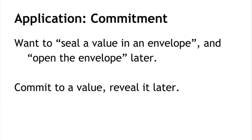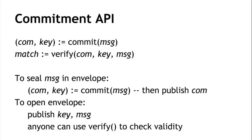An application of the hiding property is a commitment scheme — the digital analog of sealing a value in an envelope on the table. The commitment API has two operations: commit(msg) returns a commitment and a key, and verify(commitment, key, msg) returns true or false. To seal a message, you commit to it and publish the commitment. Later, to open the envelope, you publish the key and message, and anyone can verify using the commitment published previously.